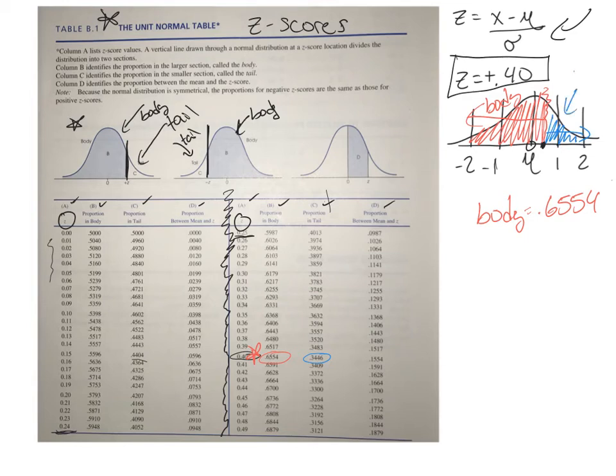The red is in the body, and the blue is in the tail. So the proportion in the tail is 0.3446.